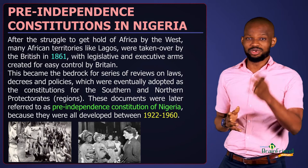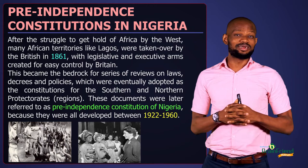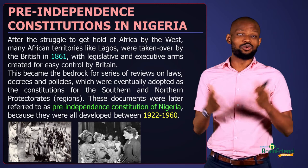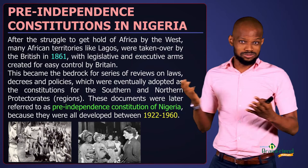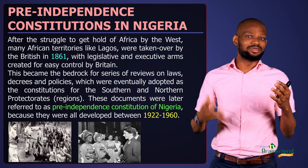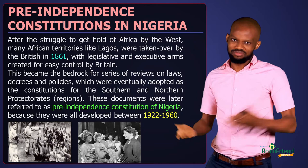In 1914, when Lord Lugard finally conquered the northern protectorate, he was appointed the first governor general of Nigeria. Mind you, Nigeria was not known as Nigeria at this point. The territory was known as the southern and northern protectorates. Under the southern protectorates we had the west, the east, the mid-west, and other parts of the southern region.